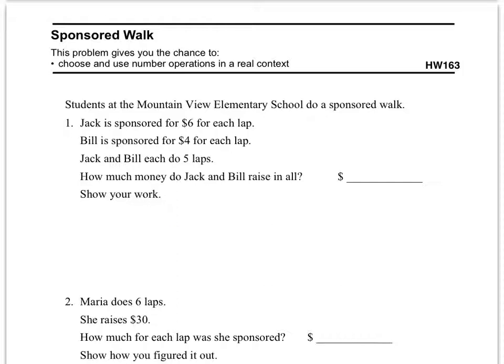So I'd create one column for Jack and I'd show how you calculate $6 per lap at five laps for Jack. Then I'd do one for Bill and I'd calculate how much Bill earns at $4 per lap, also for five laps. So then you get a total for Jack and a total for Bill. If you add those together, that'll equal the total, how much money Jack and Bill raised in all. So show your work down here.